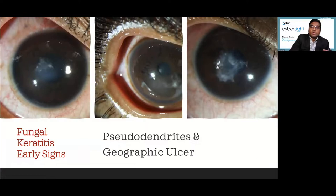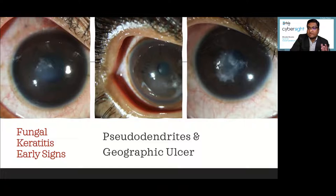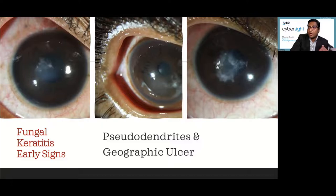Early fungal keratitis can easily mimic a dendritic ulcer, so you must be careful. To differentiate from HSV dendrites, look for end bulbs and central ulceration. In HSV dendrites, the surrounding stroma will not be very hazy — relatively clear — whereas in fungal keratitis, surrounding stromal haze is pathognomonic of fungal origin. Also, the patient will always give a history of trauma with vegetative matter. In a healing phase, the lesion can mimic a geographic ulcer of viral keratitis; differentiate by checking for signs of inflammation and congestion.